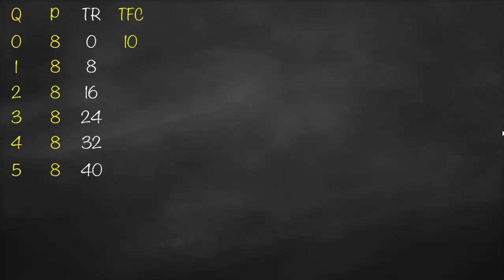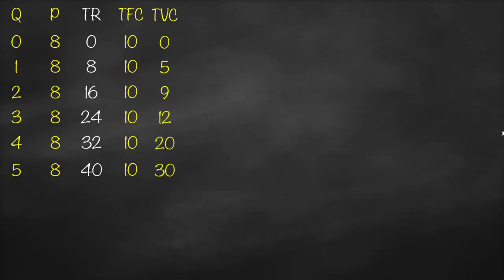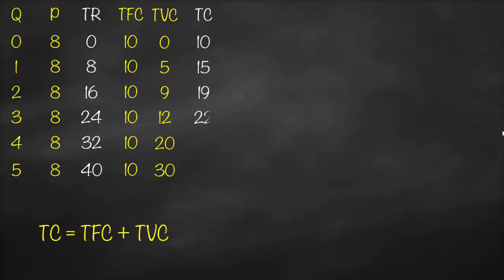Total fixed cost is given and constant at each level, which is 10. Total variable cost is given as 0, 5, 9, 12, 20, and 30 at output of 5. Total cost equals total fixed cost plus total variable cost: 10+0=10, 10+5=15, 10+9=19, 10+12=22, 10+20=30, 10+30=40.